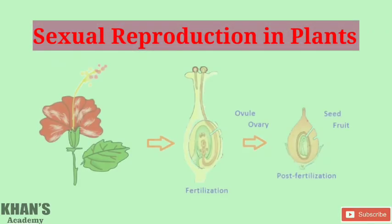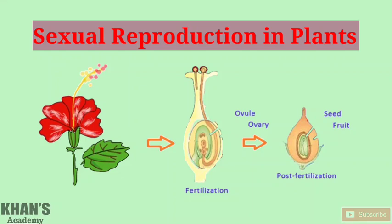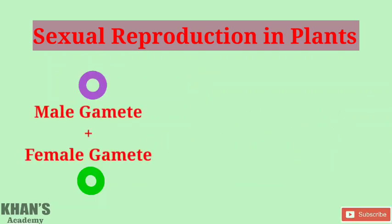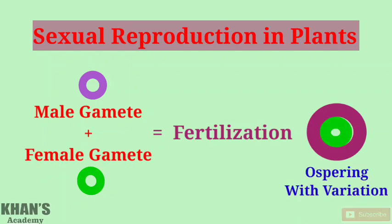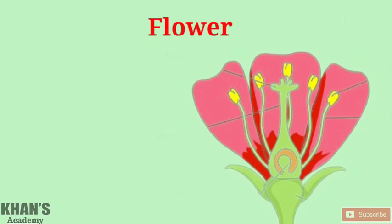Today's topic is sexual reproduction in plants, as per your syllabus. Sexual reproduction in plants is where the fusion of gametes — two compatible gametes or sex cells — takes place in mature organisms, and brings variation in the next upcoming generation.